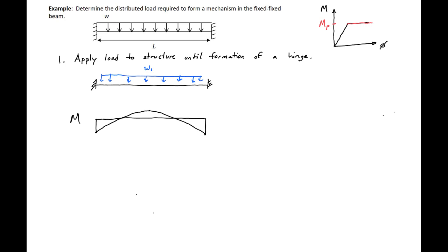The first step is to apply the load to the structure until we have the formation of a hinge. In this beam we're going to apply a load W1 to our structure, which will cause WL squared over 12 at the ends and W1 L squared over 24 at the mid-span.